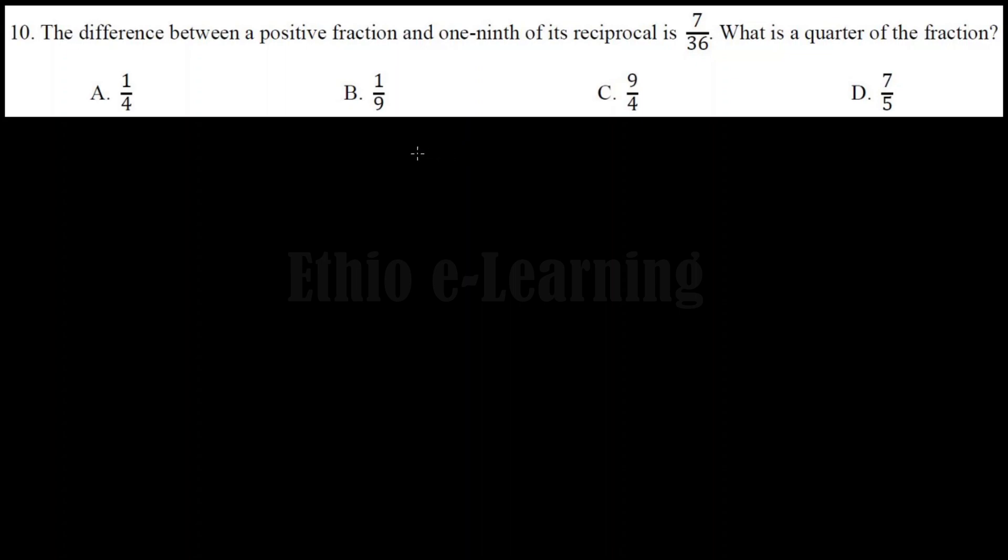If you want more detail, there's a tutorial link in the description below. Let's start. The problem says: the difference between a positive fraction and one-ninth of its reciprocal is 7 over 36.